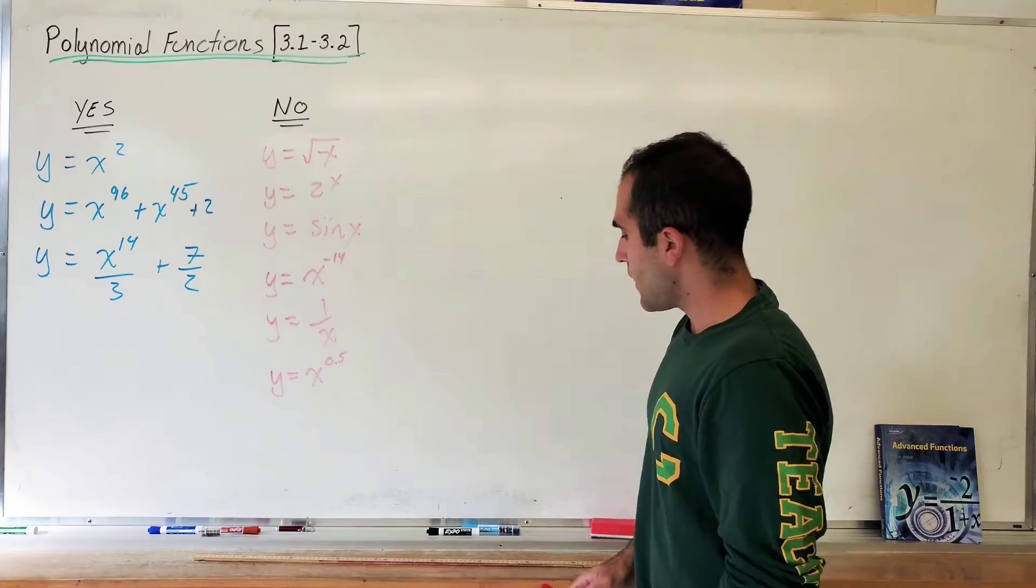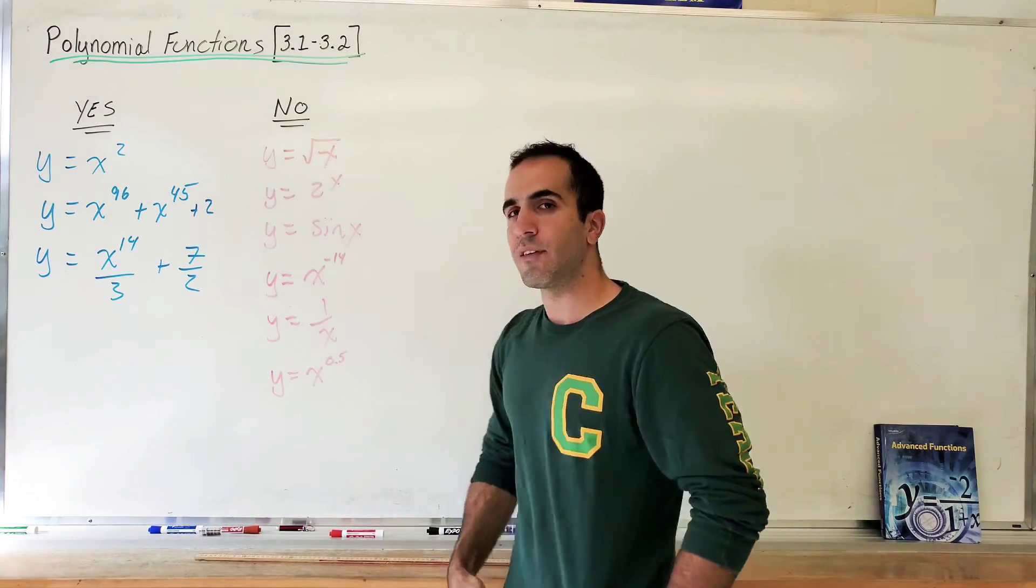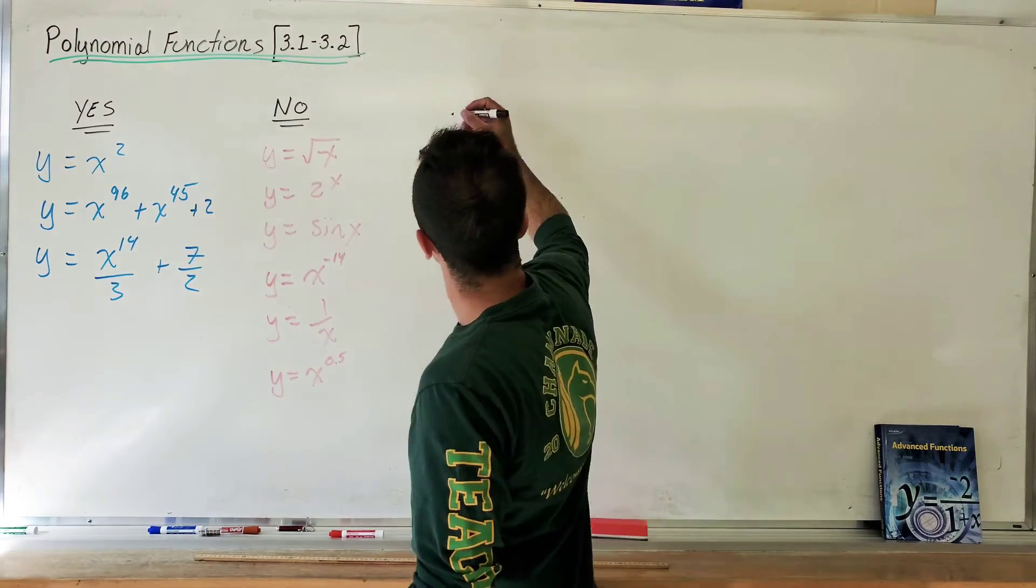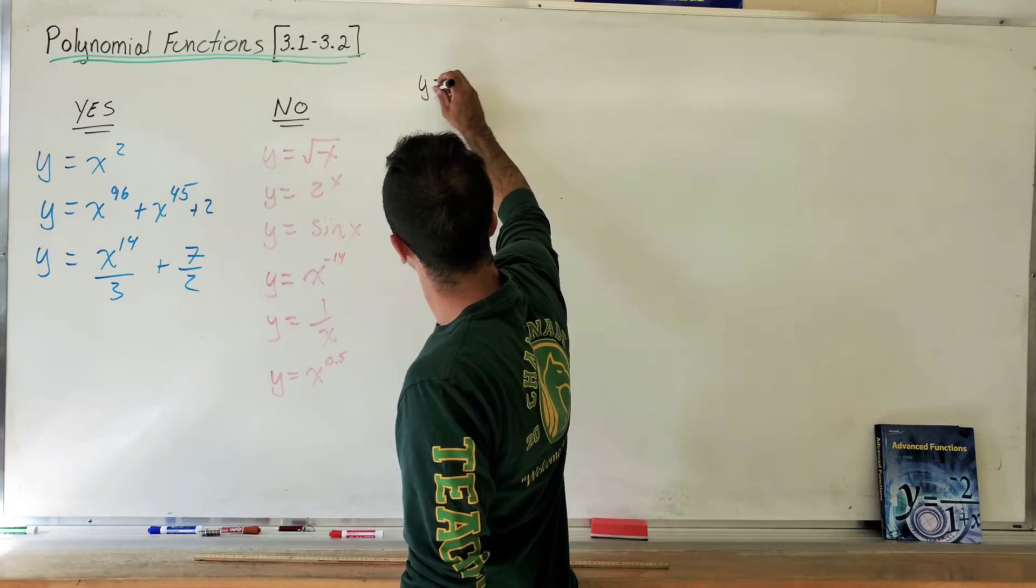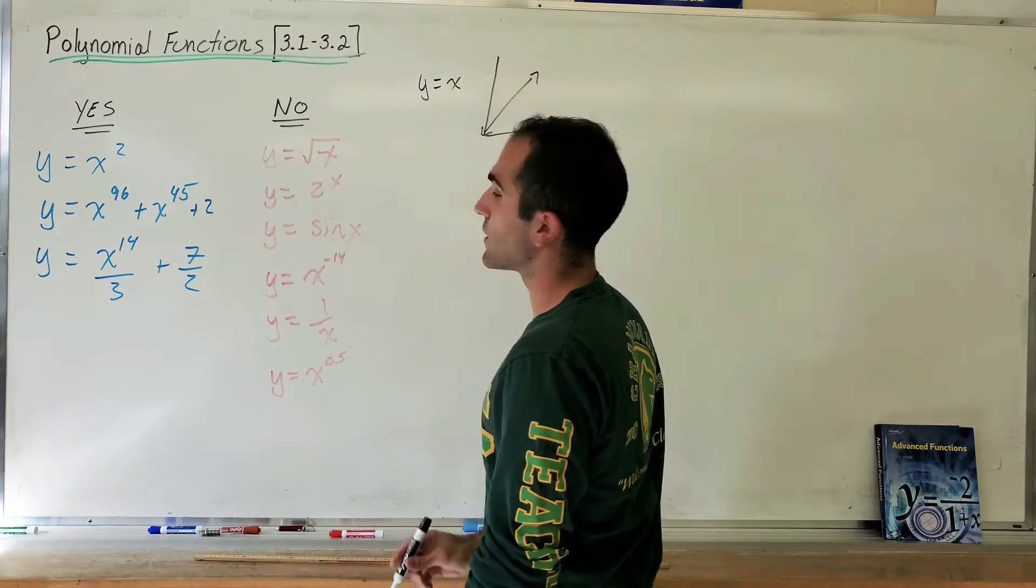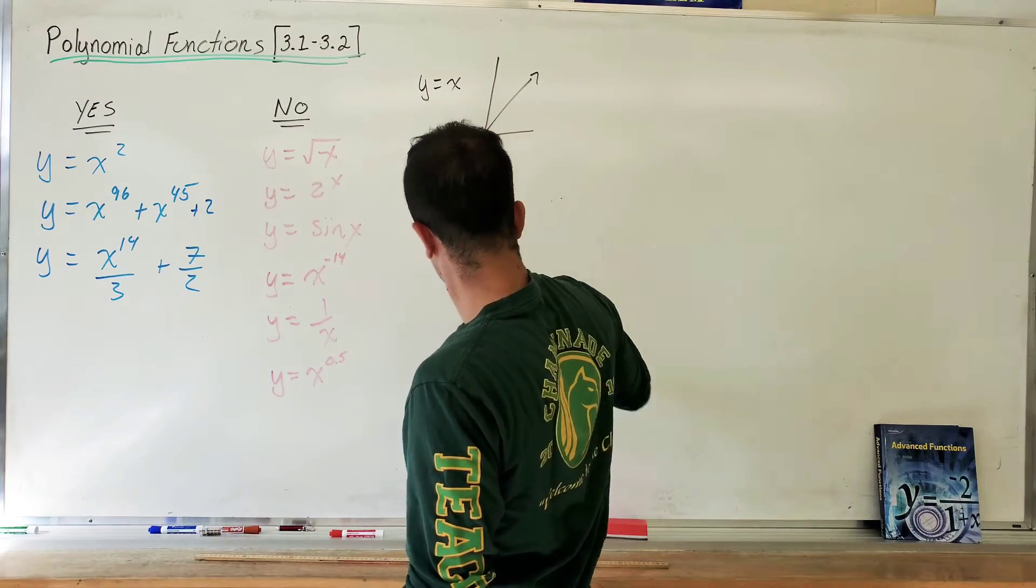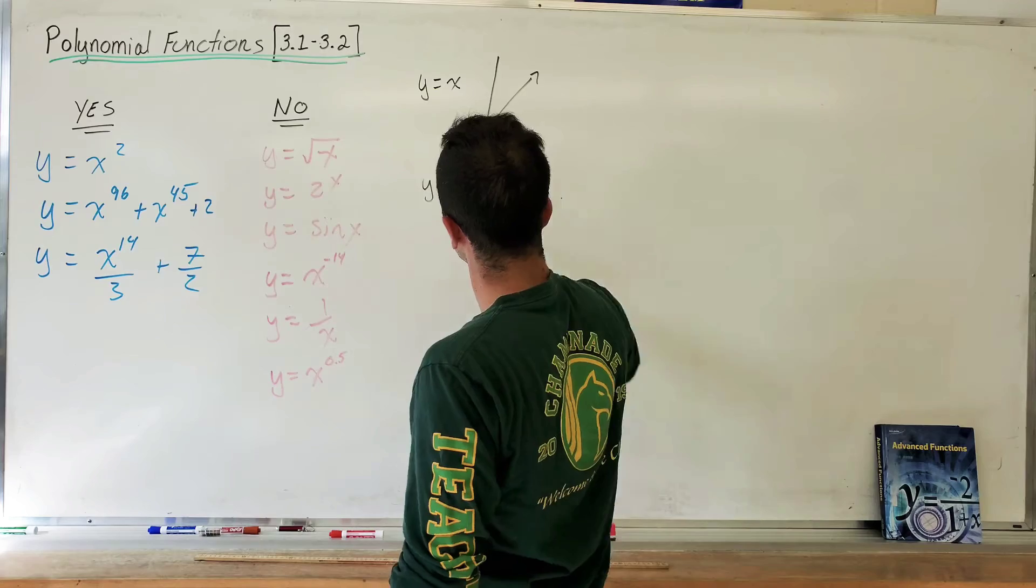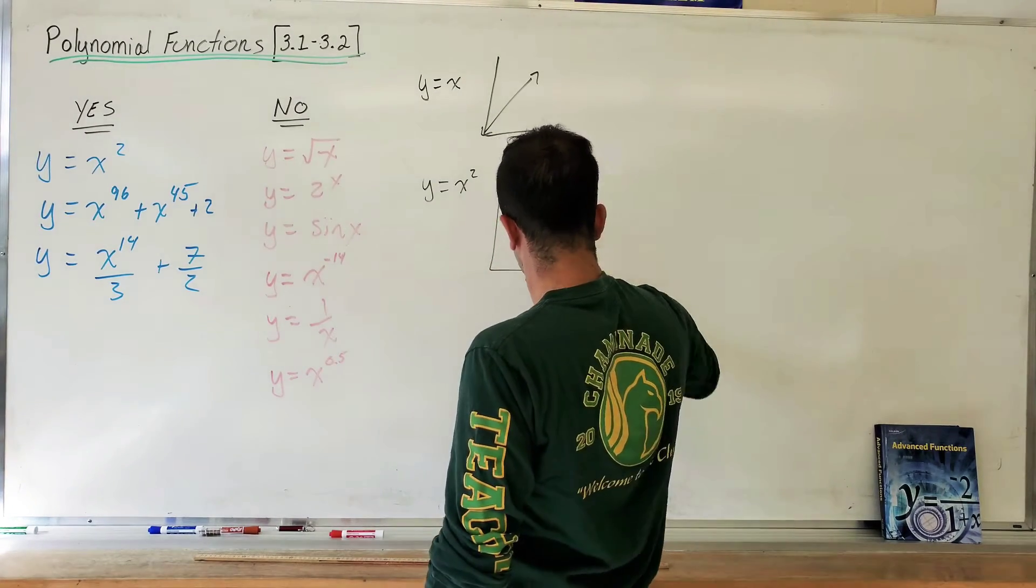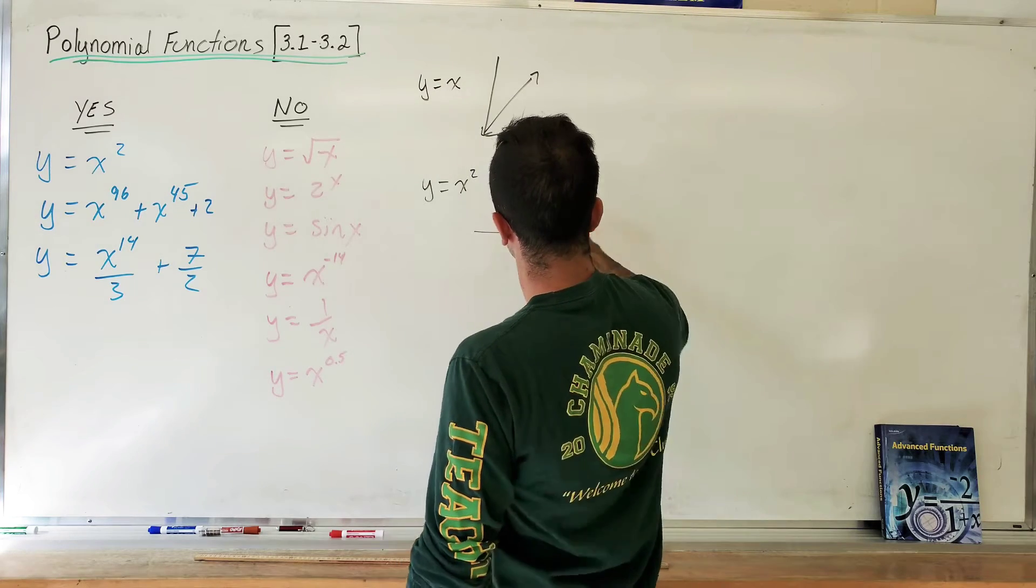Okay, so how polynomial functions behave is my favorite explanation. So you know from grade 9, y equals x. Y equals x looks like this. You know from grade 10, y equals x squared. Actually, absolutely not how it looks like. Looks like this.